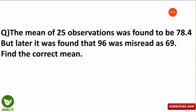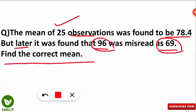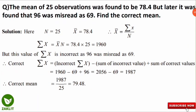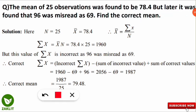The next question: the mean of 25 observations was found to be 78.4, but later it was found that 96 was misread as 69. Since one observation was incorrect, the mean will have an error, and we need to find the correct mean. These types of questions are frequently asked in the NET examination.